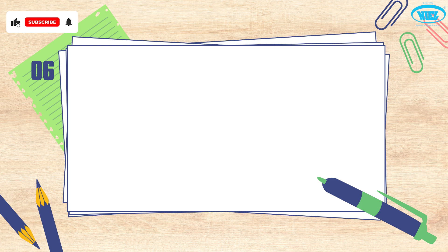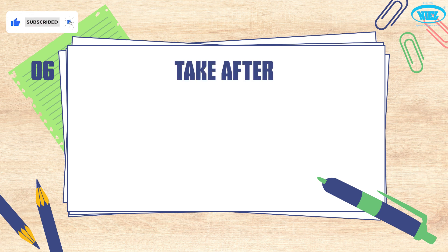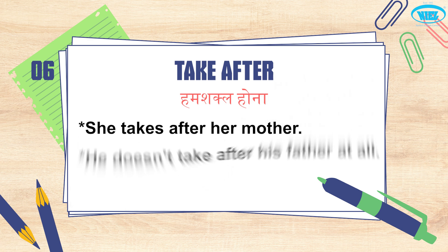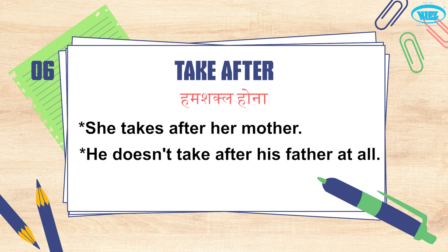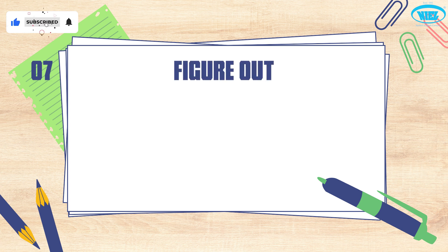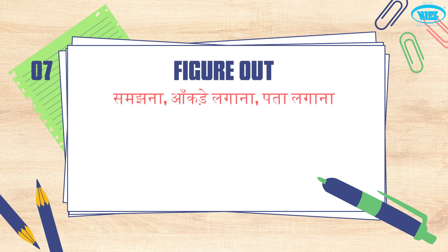The next phrasal verb is 'take after', which means to resemble someone. For example: 'She takes after her mother' — she looks like her mother. 'He doesn't take after his father at all' — he doesn't look like his father at all. The next is 'figure out', which means to understand, calculate, or find out about something.